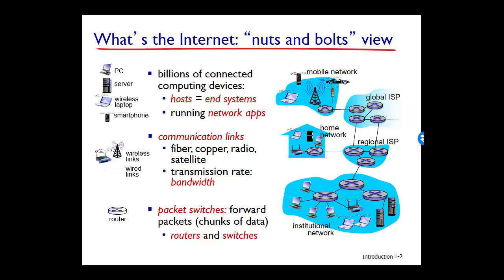A packet switch takes a packet arriving on one of its incoming communication links and forwards that packet on one of its outgoing communication links. The two most prominent types of devices in today's Internet are routers and link-layer switches. Both types of switches forward packets toward their ultimate destination. Link-layer switches are typically used in access networks — local networks before they connect to the Internet — while routers are typically used in the network core, along the path from source to destination. The sequence of communication links and packet switches traversed by a packet from the sending to the receiving end system is known as a route, or a path, through the network.